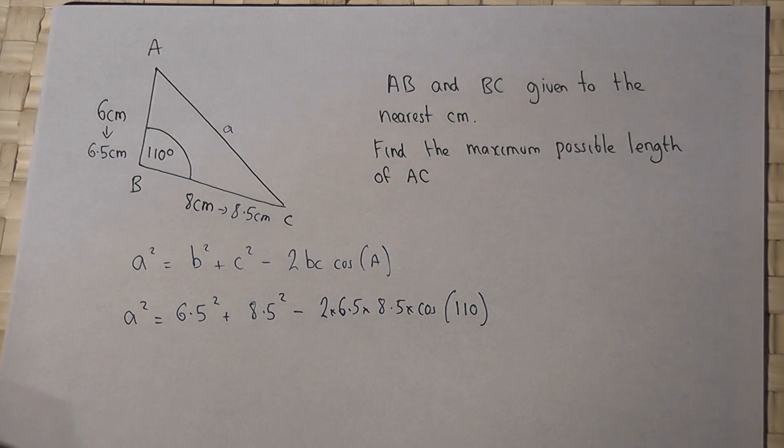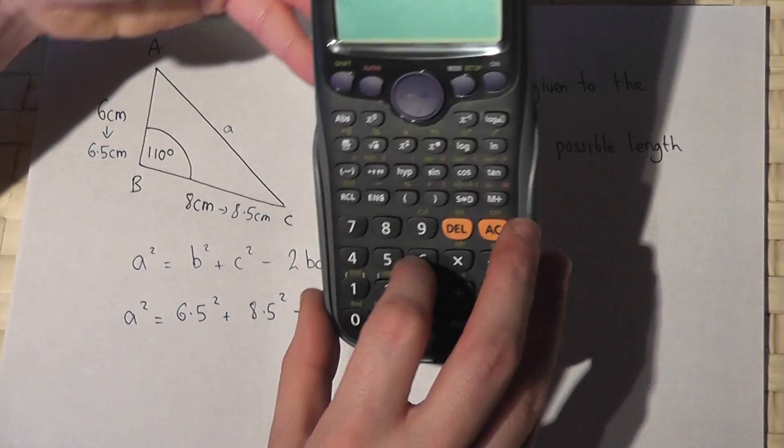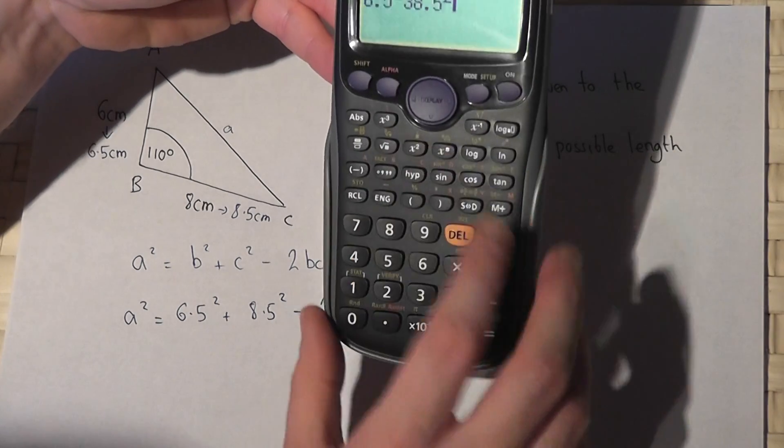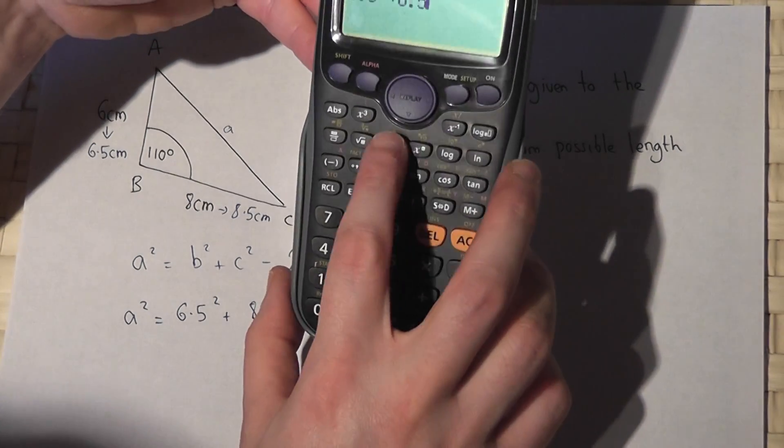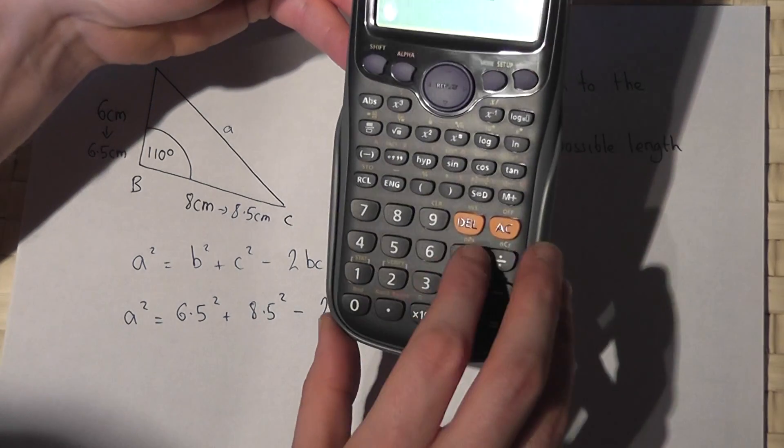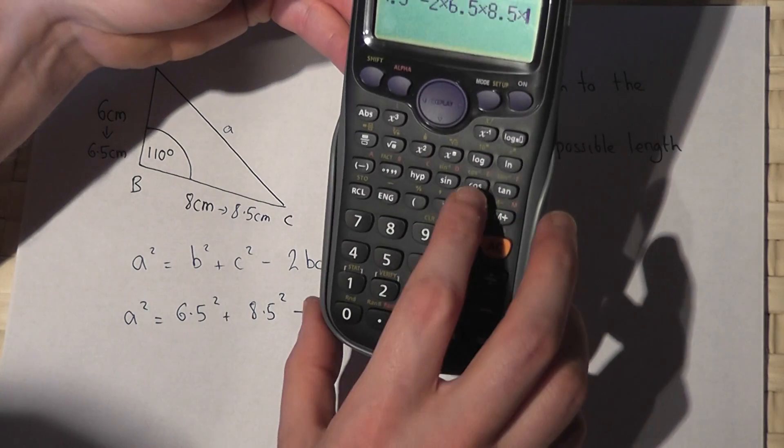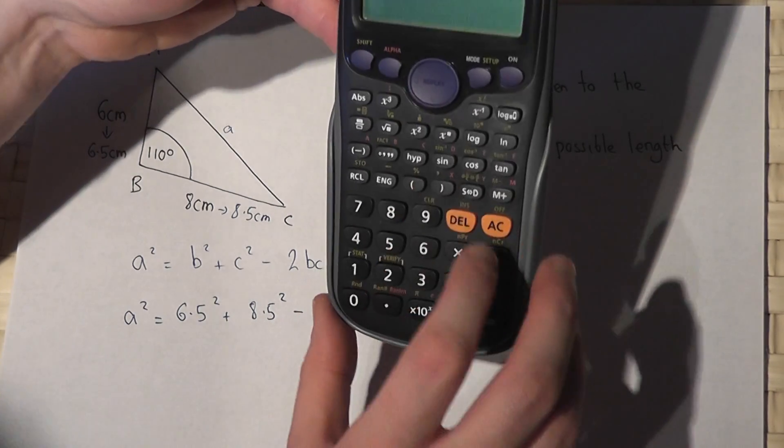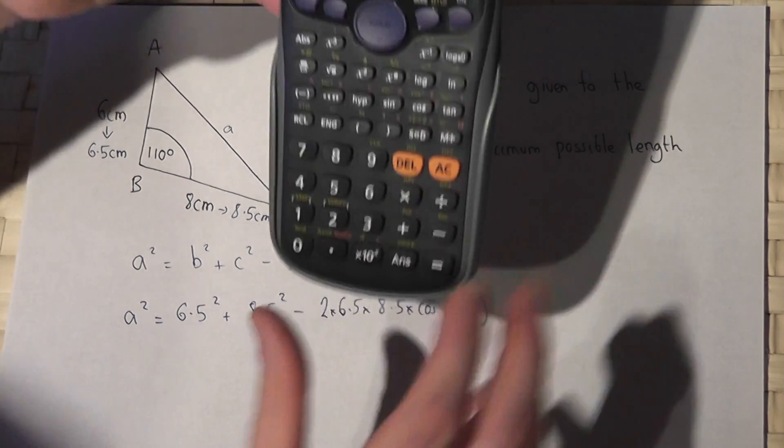Right, so we now enter that into our calculator: 6.5² plus 8.5² take away 2 times 6.5 times 8.5 times cos of 110, and this works out at 152.29.